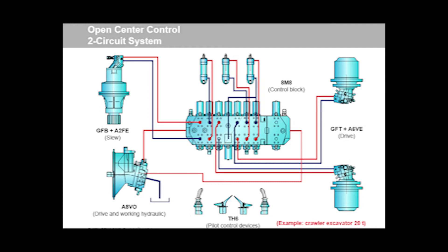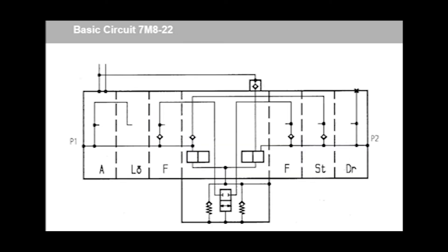Circuit diagram for excavator valve block. The block mainly comprises the housing, the control spool with return springs (1), built-in primary cartridge valves (3), and secondary cartridge valves (4), as well as load holding valves (2). Connected to pump P1 (5).